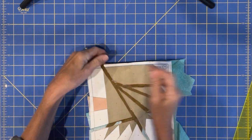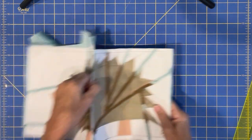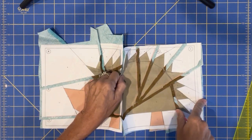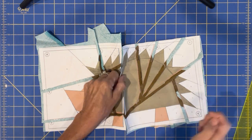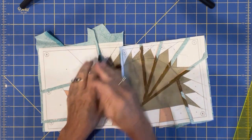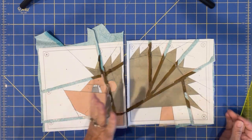Then after you pin it and sew it, then you go back and trim off the whole thing to the measurement it says in the book.